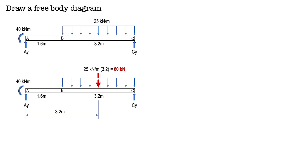Before we apply static equilibrium equations, we have to convert the distributed load into an imaginary concentrated load. We multiply the value of the distributed load by the length of the distributed load. Here we get 80 kN, and this imaginary concentrated load acts at the centroid of the distributed load, which is at the center. The distance of the imaginary concentrated load from point A is 3.2 meters.